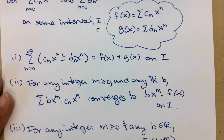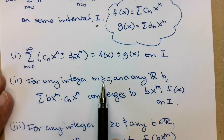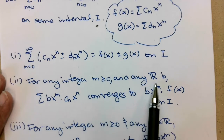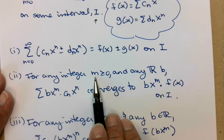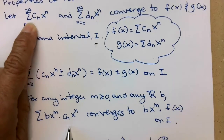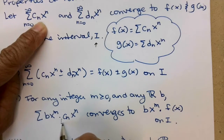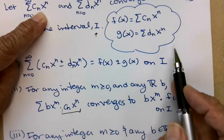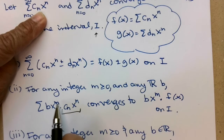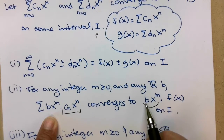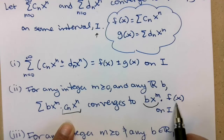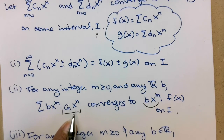These next two I have to go slowly. For any integer m greater than or equal to zero, and any real number b — where b is a coefficient and m is going to be this power of x — we can take our series c sub n times x to the n, which we know converges to f, and multiply it by a coefficient times x to a fixed power. That will converge to b times x to the m times f of x, and the interval of convergence stays the same on i.